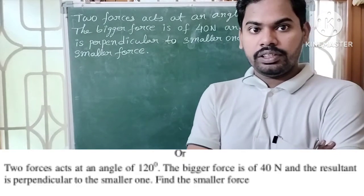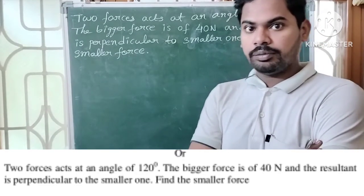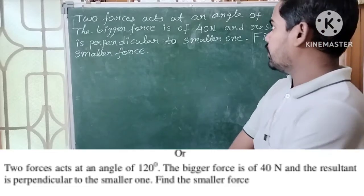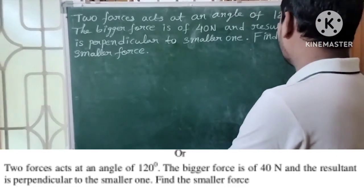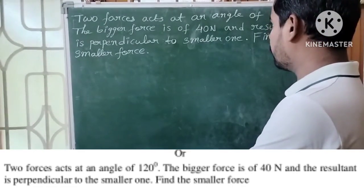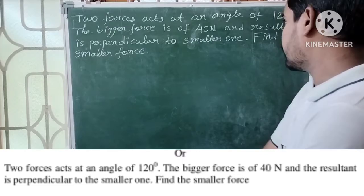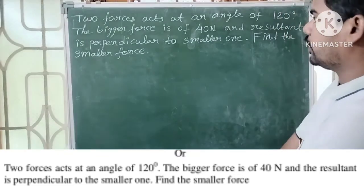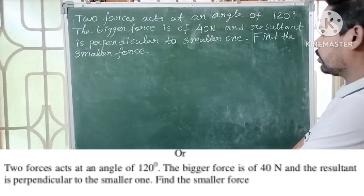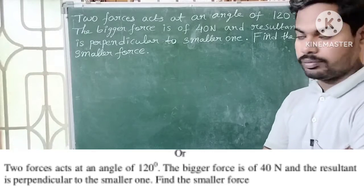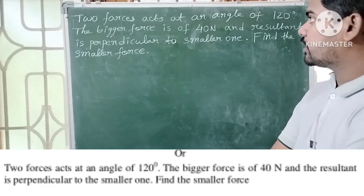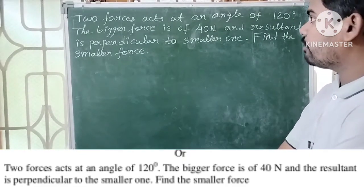Good morning everyone. Next problem: two forces act at an angle of 120 degrees. The bigger force is 40 Newtons and the resultant is perpendicular to the smaller one. Find the smaller force.